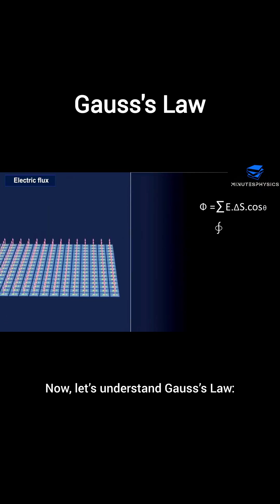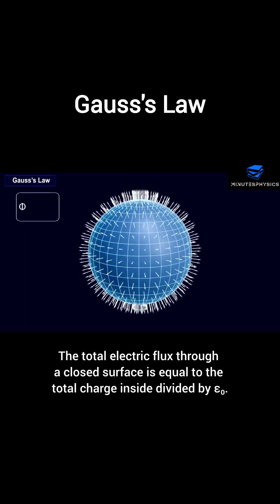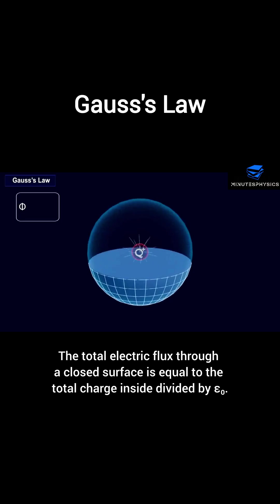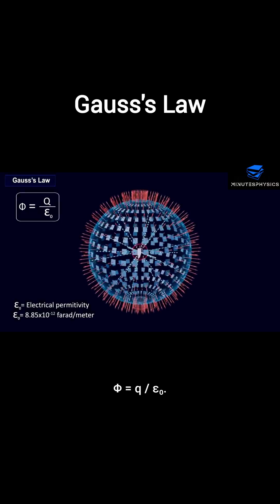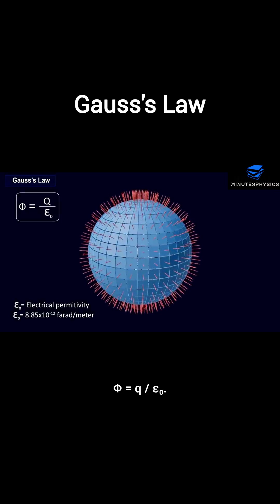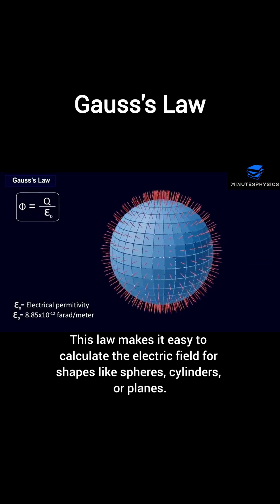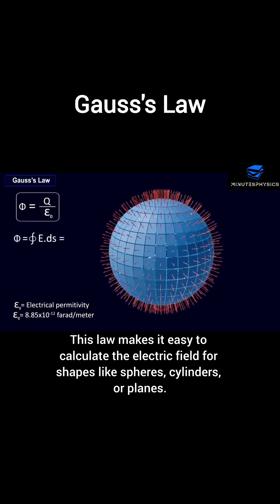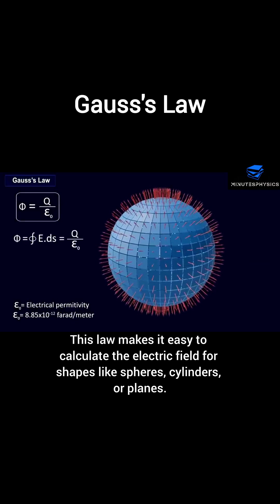Now let's understand Gauss's law. The total electric flux through a closed surface is equal to the total charge inside divided by epsilon zero: phi equals Q divided by epsilon zero. This law makes it easy to calculate the electric field for shapes like spheres, cylinders, or planes.